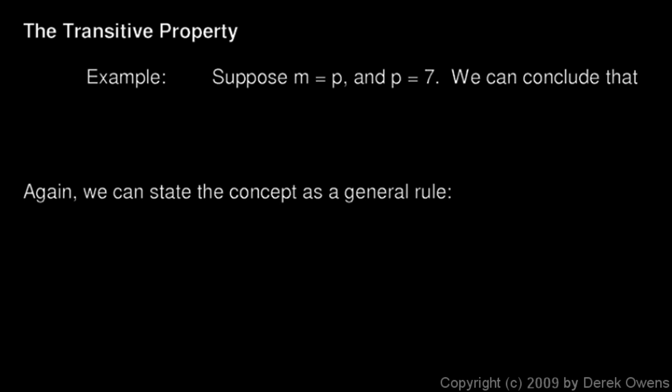Okay, now we will talk about the transitive property, and here's an example. Suppose that m is equal to p, and p is equal to 7. Well, in that case, we can conclude that m must equal 7, and that should be clear if you just think about it for a little bit.